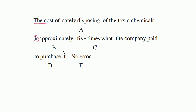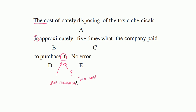Now this 'it' is a little bit fishy. What is this 'it' referring to? Is this 'it' referring to the cost? No. The 'it,' I think, based on the meaning of the sentence, is referring to the chemicals. The company paid to purchase the chemicals. So this right over here should be 'the chemicals' — that's a plural noun.